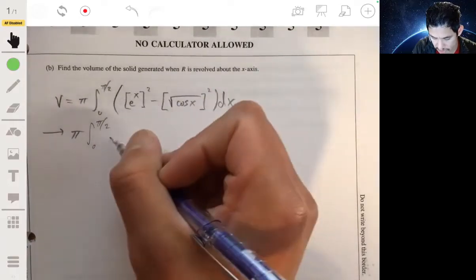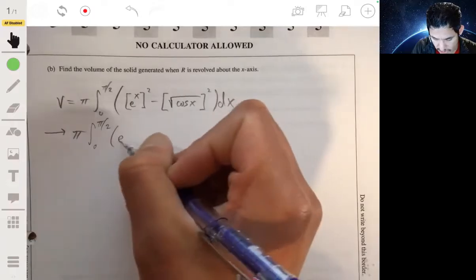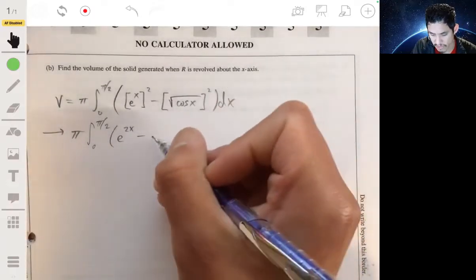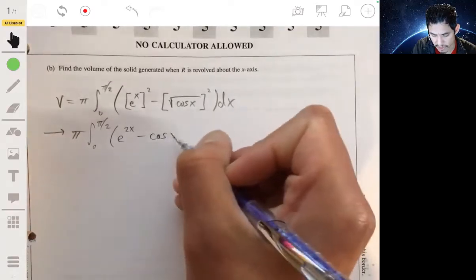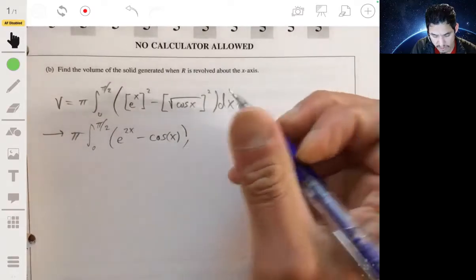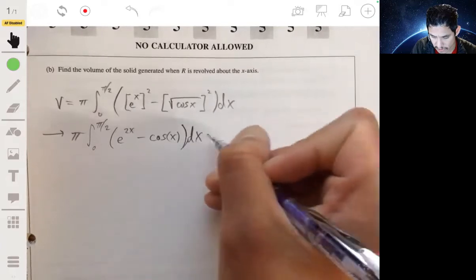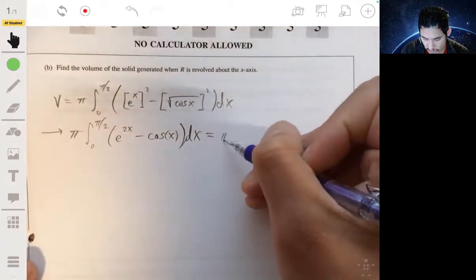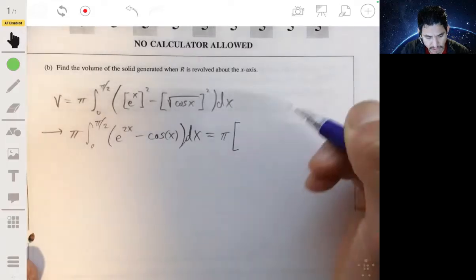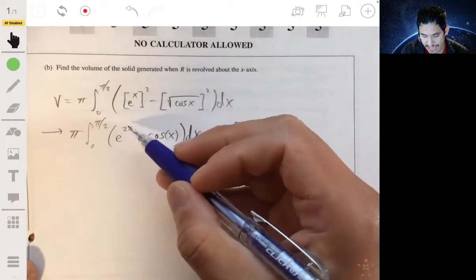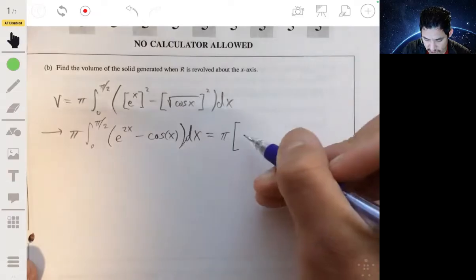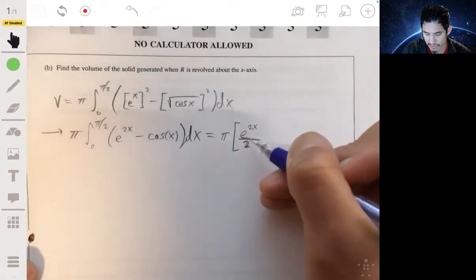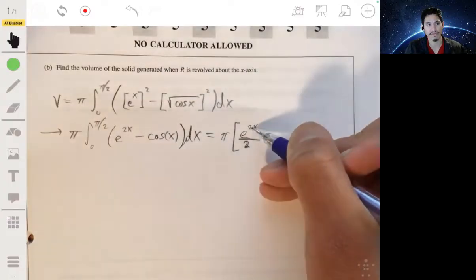The square root squared—the square roots cancel—so this is just minus cosine x dx. Evaluate and we find the antiderivative. We get π times the antiderivative of e^(2x) is e^(2x) over 2, because we just divide by the derivative of 2x.